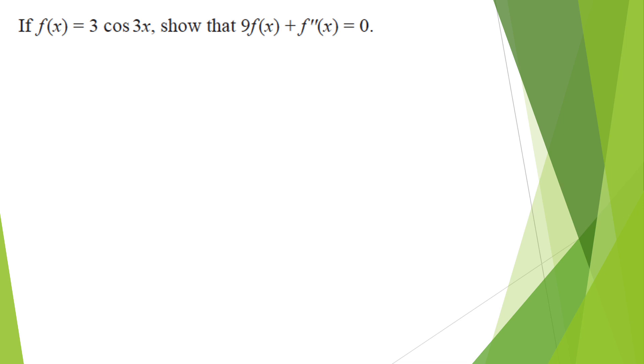Okay, this one is one of the A-level questions. It's to show that 9 multiplied by the differentiation, sorry, 9 multiplied by the function plus the double differentiation equals 0.